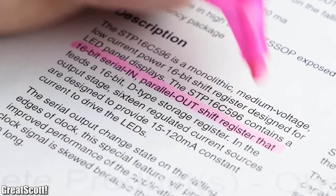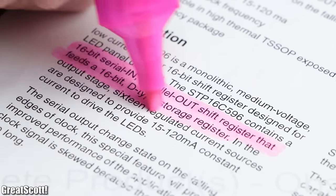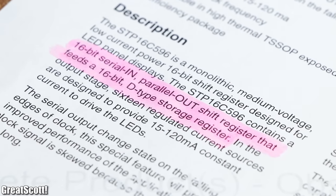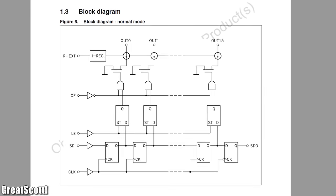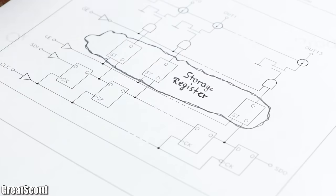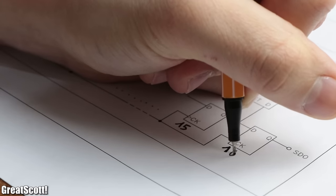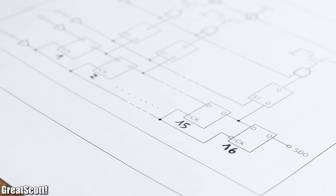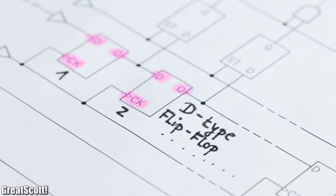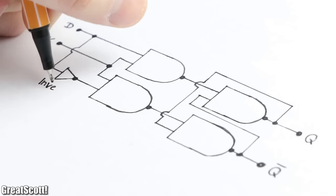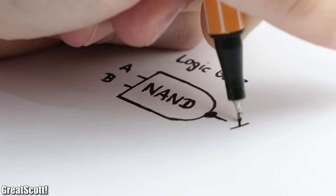The datasheet told me that the STP16C596 ICs are actually 16-bit serial-in parallel-out shift registers that feed a 16-bit D-type storage register. That sounds super confusing at first, but looking at the block diagram makes it easier to understand. The upper part is the storage register and the lower part is the shift register, which consists of 16 blocks labeled D, Q, and CK — called D-type flip-flops.